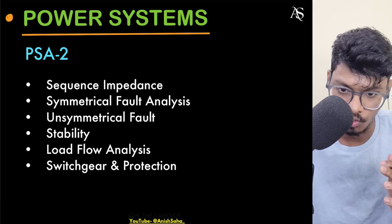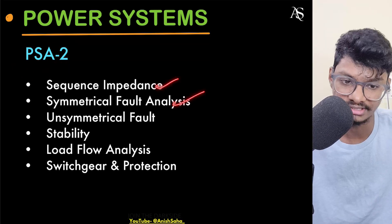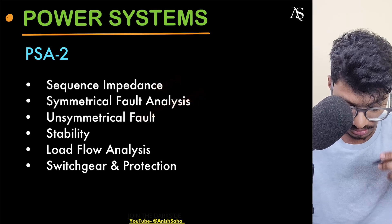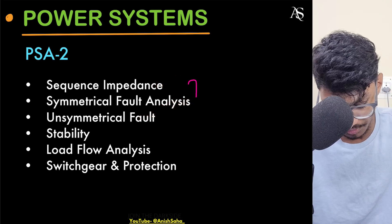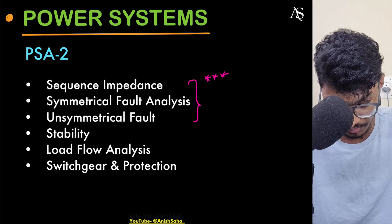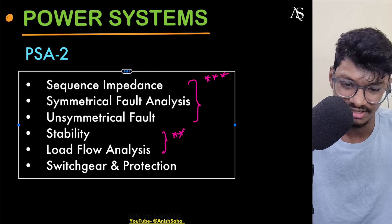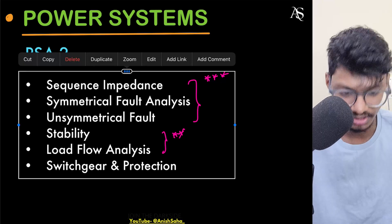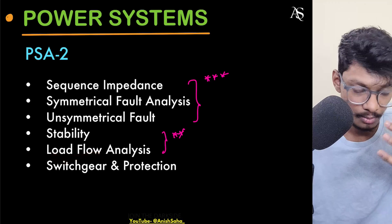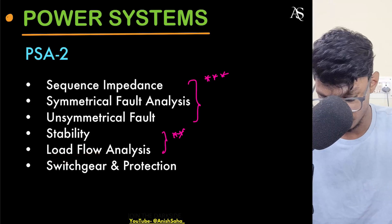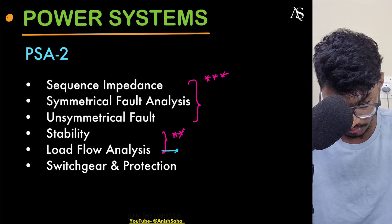For PSA2, everything is important. Sequence impedance, symmetrical fault analysis, and unsymmetrical fault analysis are three-star topics — very very important. Load flow analysis gets two stars, and switchgear gets one star and can be skipped. Inside load flow analysis, focus mainly on Y-bus: how to build the Y-bus, as it is very very important.